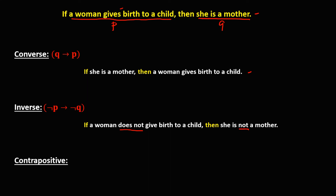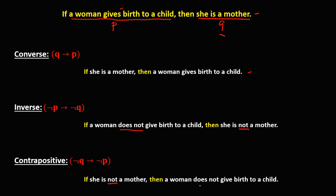For the contrapositive, that's not Q implies not P. Therefore, not Q: if she is not a mother, then for the negation of P: a woman does not give birth to a child. So this is how to write a converse, inverse, and contrapositive of a conditional statement.